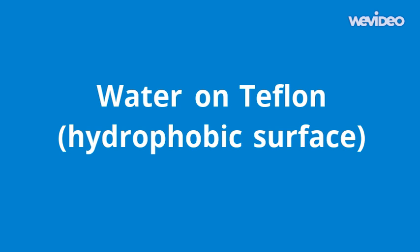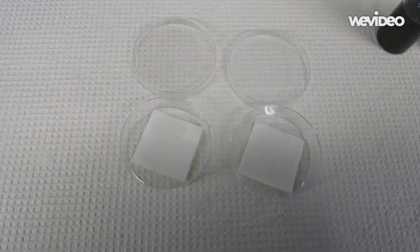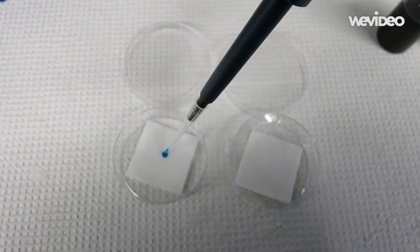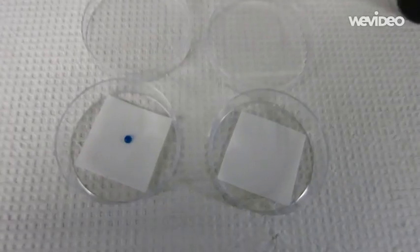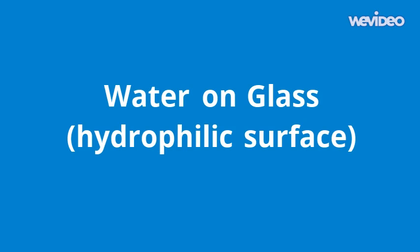Now, this shows water on a Teflon surface, or a hydrophobic surface. Since water is hydrophilic and doesn't like hydrophobic substances, it will bead up on the surface with a very high contact angle.